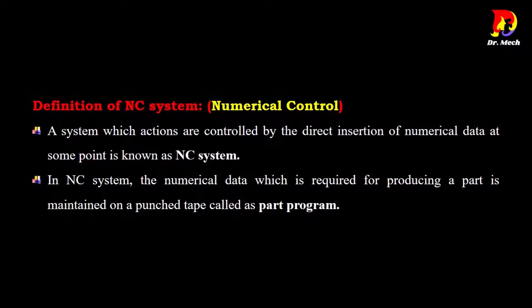Definition of NC System — Numerical Control. A system in which actions are controlled by the direct insertion of numerical data at some point is known as NC System. In NC System, the numerical data which is required for producing a part is maintained on a punched tape called as part program.